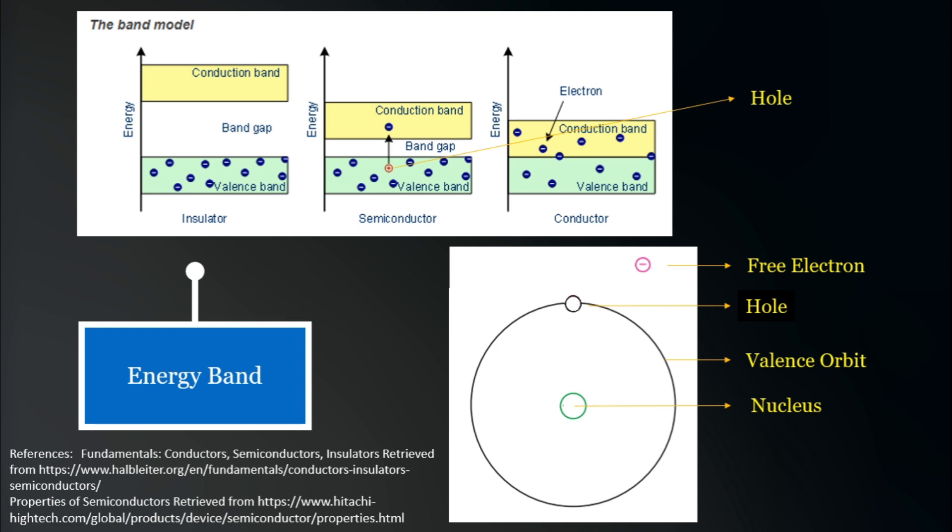Therefore, a semiconductor can act as a conductor or an insulator depending on the temperature. Now that we have provided an evidence that the property of a semiconductor is between an insulator and a conductor, let us now discuss the types of semiconductors.